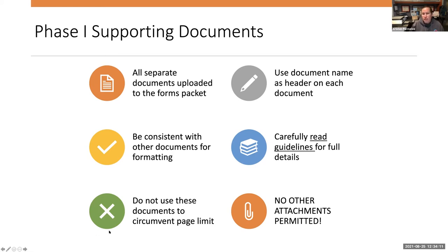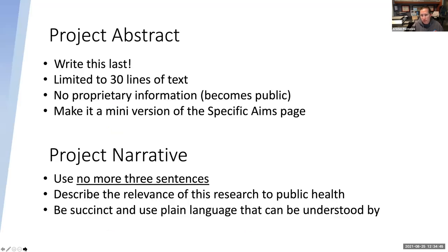It's important to not use these extra documents to circumvent the page limit. This can be a problem with human subject sections or vertebrate animal sections — make sure you still include some information in the proposal about those things. You can't just say 'see vertebrate animal section' — if your aim is to conduct animal studies, you still have to include details. These attachments are in addition to the main proposal. And it's important to note that there are no other attachments or appendices permitted at all.